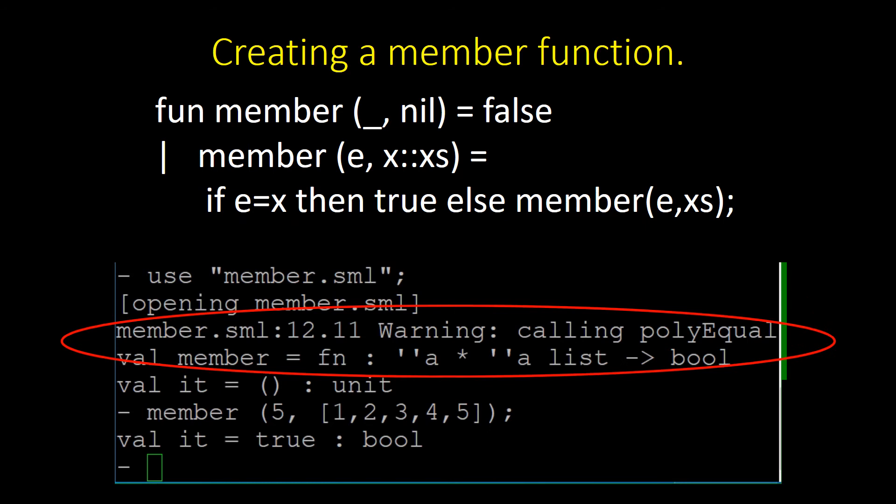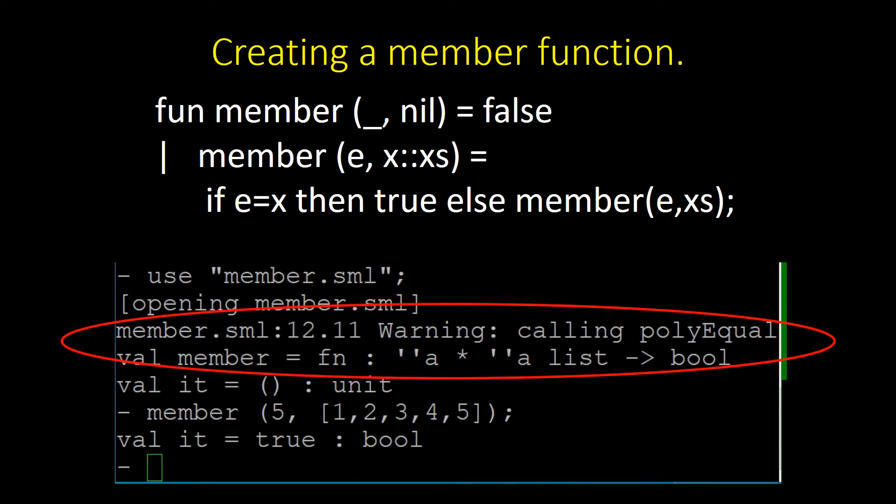Wait. What is that warning? Calling polyEqual val member? That is not a warning we need to worry about. It is not an error in the code. It is just warning us about a slight, unavoidable inefficiency.